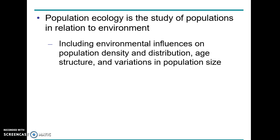We're going to look at population density and distribution - how organisms are distributed within their environment. In AP Environmental Science we talked about clumped, evenly distributed, dispersed, and all of those things, so we're just going to review that. We'll also look at age structure - for example, countries like Japan have an inverted pyramid where there are more old people compared to young people.